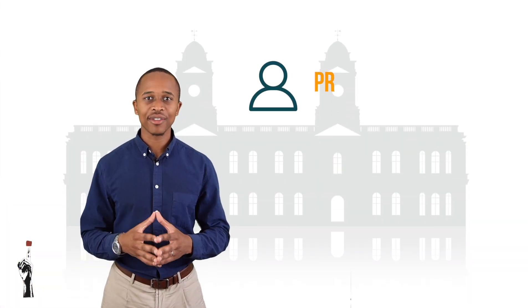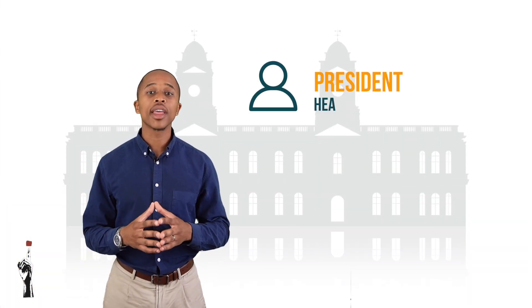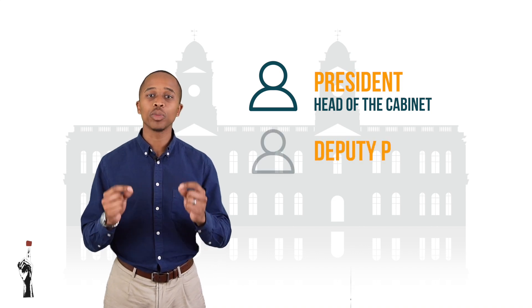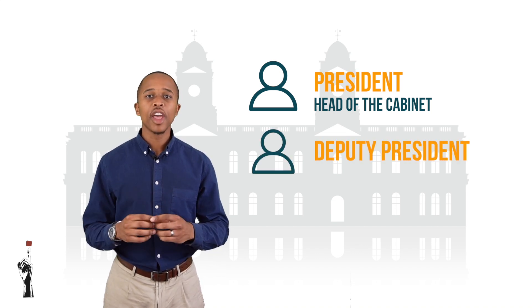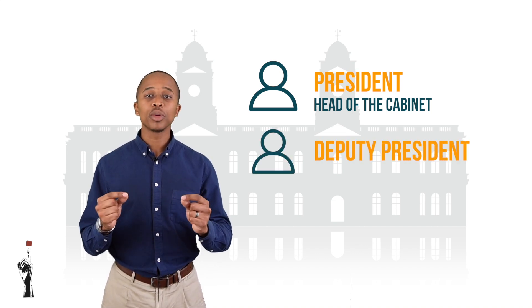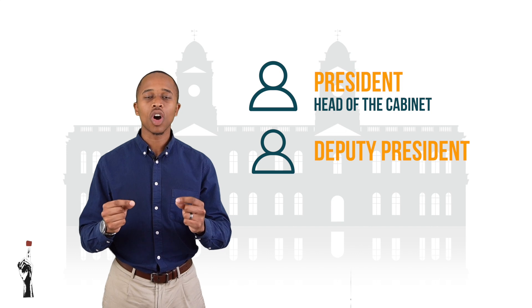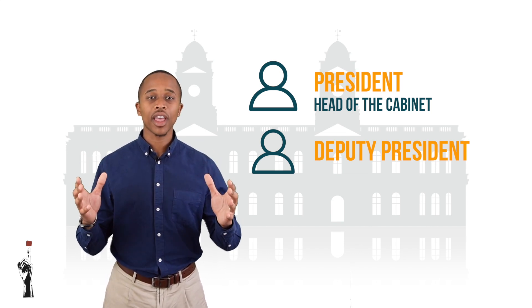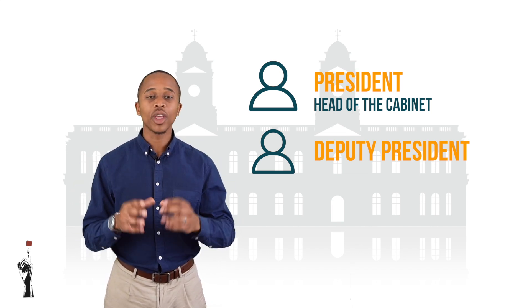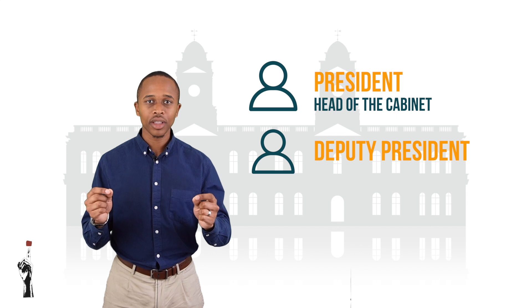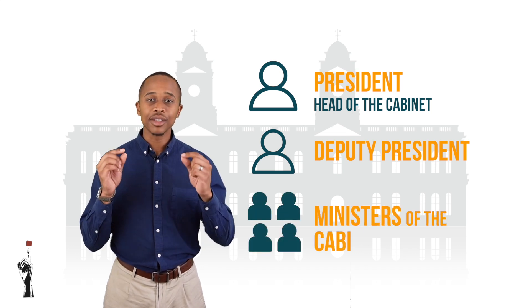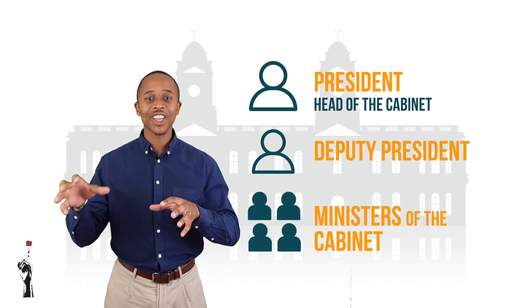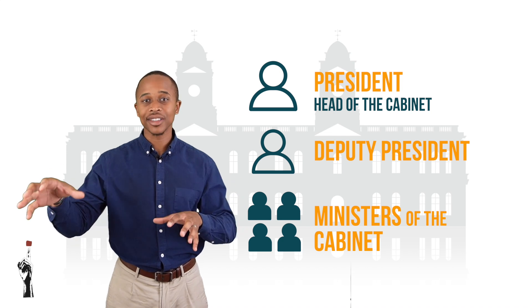The president of South Africa is the head of the cabinet and is assisted by the deputy president. They are responsible for the day-to-day management of the country. It is a very big task, and therefore the cabinet has different ministers who are each in charge of different sections of the country.